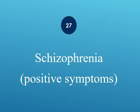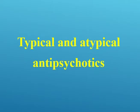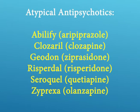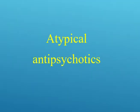Schizophrenia positive symptoms: use typical or atypical antipsychotic drugs. Typical first-generation antipsychotics include haloperidol, chlorpromazine, thioridazine, perphenazine, thiothixene, fluphenazine, and mesoridazine. Atypical antipsychotics include aripiprazole, clozapine, ziprasidone, risperidone, quetiapine, and olanzapine. Schizophrenia negative symptoms: use atypical antipsychotics.